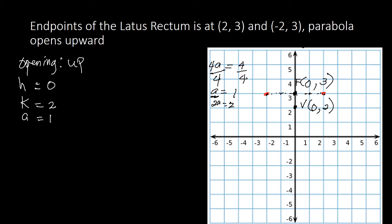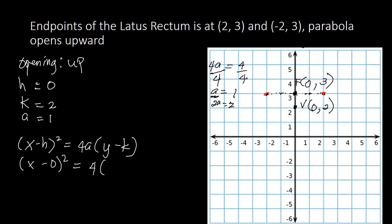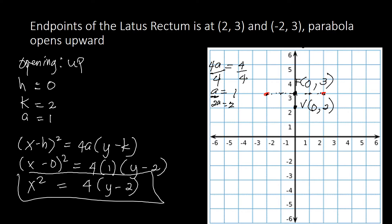Since the parabola opens upward, the standard equation is (x − h)² = 4a(y − k). Plugging in h equals 0, a equals 1, and k equals 2: (x − 0)² = 4(1)(y − 2), which simplifies to x² = 4(y − 2). That is our standard equation of the parabola.